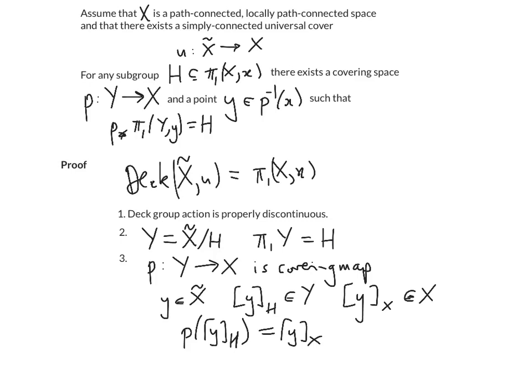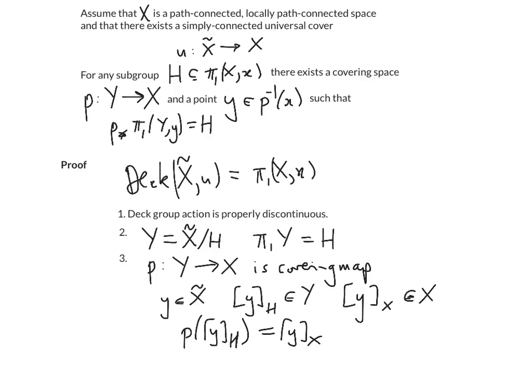OK, so the first thing we need to do is to prove 1 that the deck group is properly discontinuous. That will imply 2 immediately. So we then need to prove 3 that this forgetful map is a covering map.